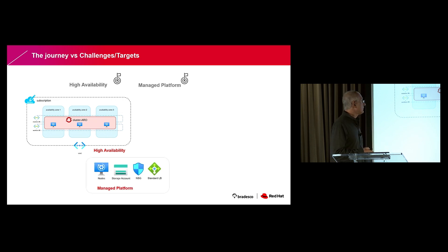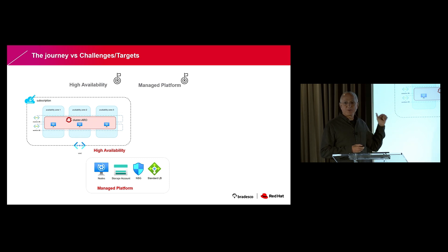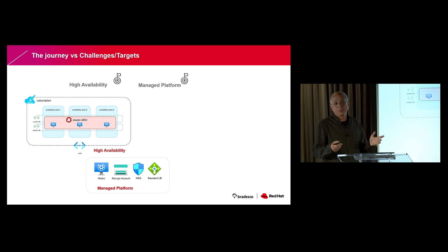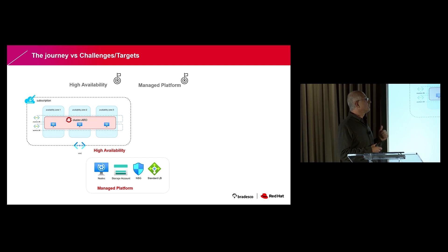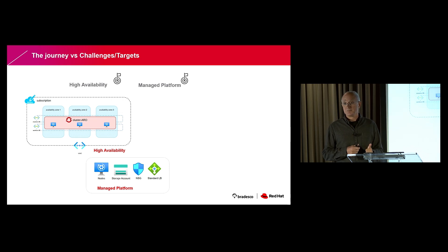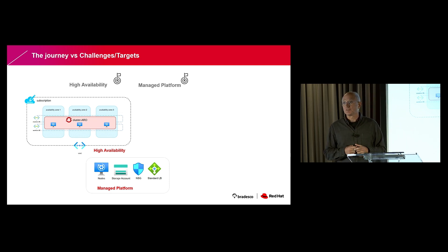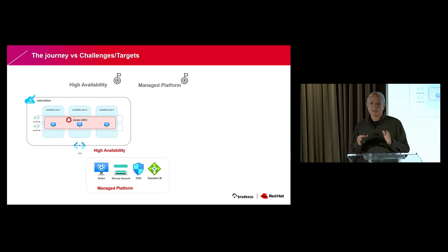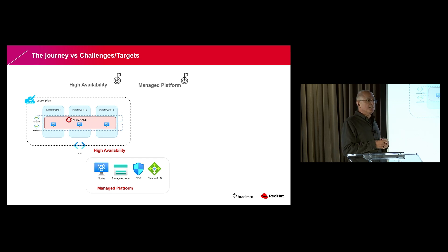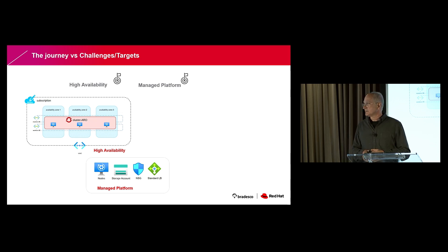Another point is about managed platform as a service. Here, ARO provides not only the cluster, but all the components of the infrastructure in Azure supporting the cluster, being managed by a Red Hat SRE team and also supported by Red Hat and Microsoft teams. This is perfect for the bank because now they have an application platform ready to be used.